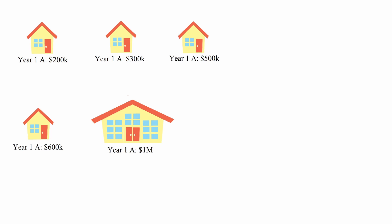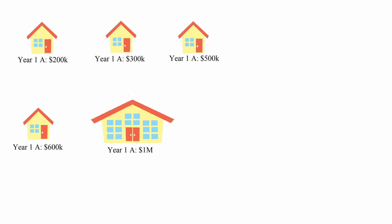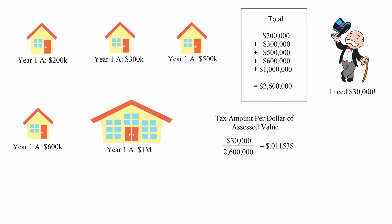I'll give you an example to see how these things work together. Let's say a town has five homes with these assessed values: $200,000, $300,000, $500,000, $600,000, and $1 million. The total of these assessed values is $2.6 million. Let's say that the local government decides it needs to raise $30,000 from property taxes from the town. It wouldn't be fair to ask the same amount of property tax from the owner of the $200,000 home compared to the owner of the $1 million home, so they effectively weigh the tax based on the value of the homes. In this case, they would divide $30,000 by $2.6 million, which is 0.011538.